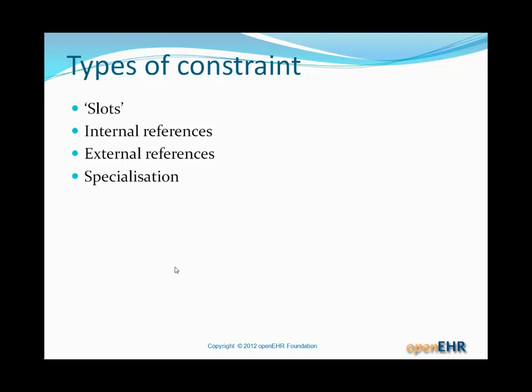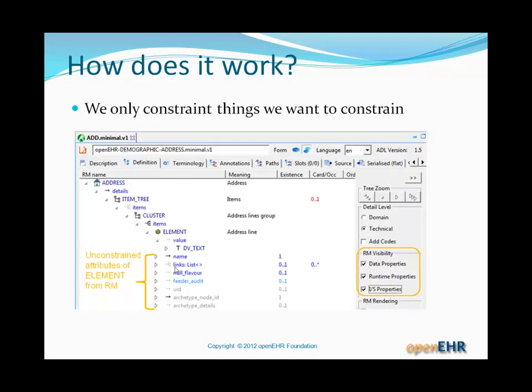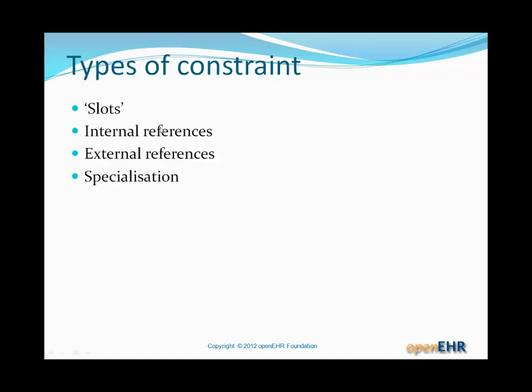What are the types of constraint? There are quite a few — over and above the basic form of just choosing properties and class names. There are slots, internal references, external references, specialization, and of course constraining of leaf data values. We'll go into all of those properly in later installments of the course. For now, we'll just have a quick look by looking at some archetypes.